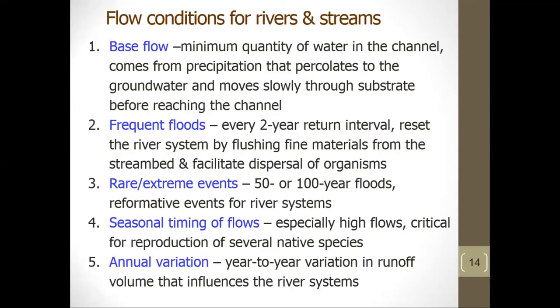Flow conditions for rivers and streams include: base flow, the minimum quantity of water in the channel, which comes from precipitation percolating to groundwater and moving slowly through substrate before reaching the channel; frequent floods with a two-year return interval, which reset the river system by flushing fine material and facilitating dispersal of organisms; rare or extreme events such as 50 or 100-year floods, which are reformative events; and seasonal timing of flows, especially high flows, which are critical for the production of several native species, as well as year-to-year variation in runoff volume that influences the river system.